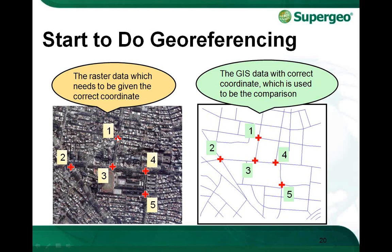You need to add control points one by one — add one point first, then switch to the reference GIS data and add the corresponding control point. Then add the second pair, go to the reference GIS data to add another control point. You need at least four pairs of control points to perform the data rectify on your registered data. This is how you can do GeoData referencing with our new GeoReferencing tool.